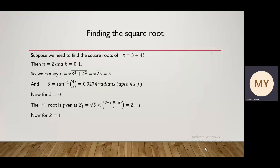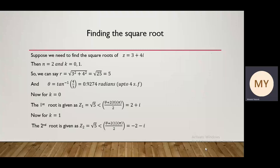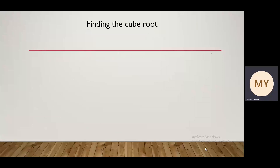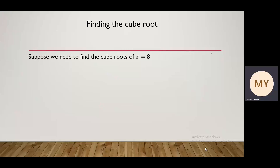For the second root, k equals 1, and z2 equals root of 5, argument (theta plus 2 pi) divided by 2, which gives minus 2 minus i. So these are the two square roots of 3 plus 4i.